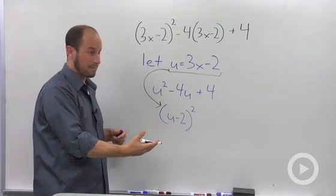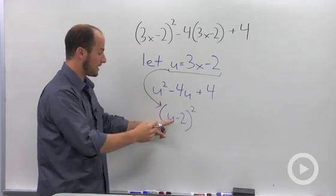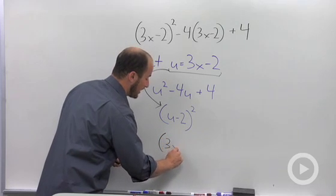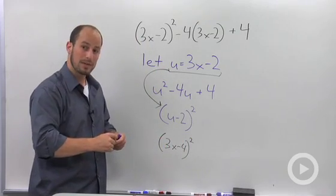So plug it back in. So this u is 3x minus 2, so we end up with 3x minus 2 minus 2. Combining like terms, what we have then is 3x minus 4 quantity squared.